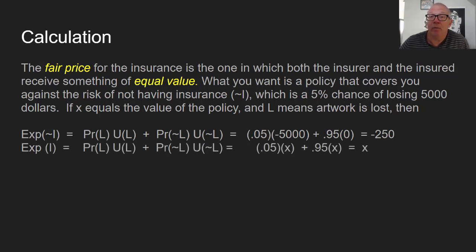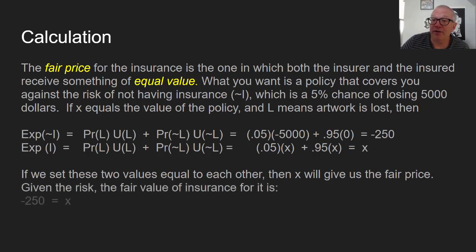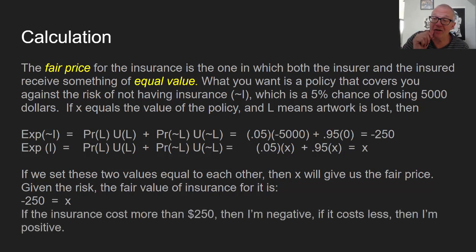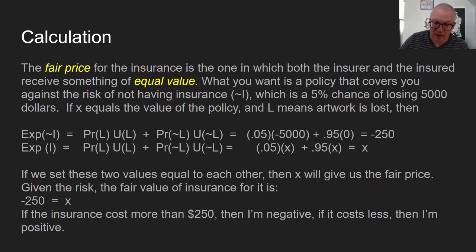So the fair value of an insurance policy is set equal to that number — $250. If insurance costs $250, you break even. If it costs more than $250, you're actually losing money, because the risk you faced was only minus $250. If the insurance costs $200, you're actually ahead — you've gained something. The zero threshold — the fair price of insurance — is just where we set it equal to zero, and in this case, since the risk is 5%, that's $250. Anything more or less puts us into a different answer about the value of the insurance.